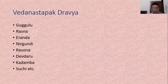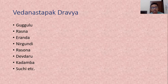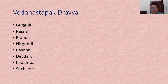Vedanastapan Dravyaguna means analgesic drugs which reduce the Vedana or pain. The drugs used to subside or cure pain are known as Vedanastapan Dravyaguna. In this group there are many important drugs like Gugulu, Rasna, Aranda, Nirgundi, Rasona, Devdaru, Kadamba, Suchi and many more. These are the important plants used for Vedanastapan Dravyaguna.